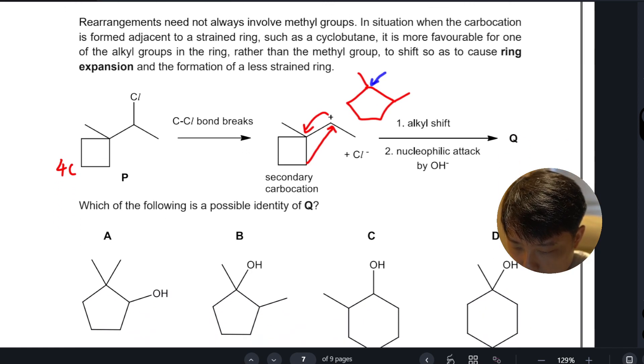So our option should be B. C and D are out because they are six-member rings.